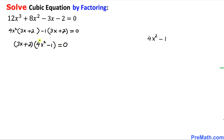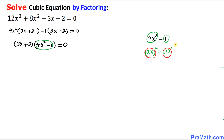Now let's focus on the factor 4x squared minus 1, which I've copied down on the right hand side. Let's manipulate this a little bit — 4x squared can be written as 2x to the power of 2, and 1 can be written as 1 squared, so that gives us a difference of two squares. Therefore we use the formula a squared minus b squared equals a minus b times a plus b, giving us 2x minus 1 times 2x plus 1.